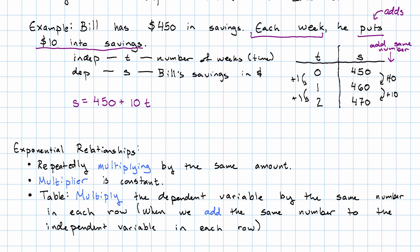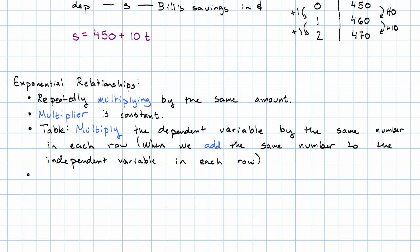If we have a table, we see that we multiply the dependent variable by the same number in each row when we add the same number to the independent variable. Notice that there's a lack of symmetry here. We're adding to the independent variable and multiplying the dependent variable. Another way to say this is, as we move down rows in the table, the ratio of the rows is constant.